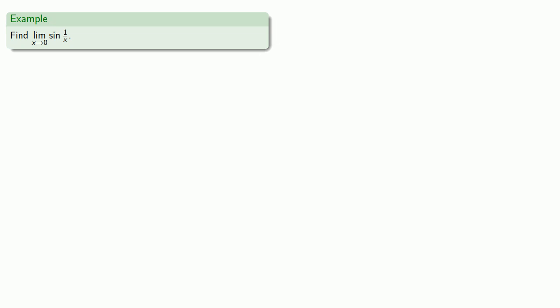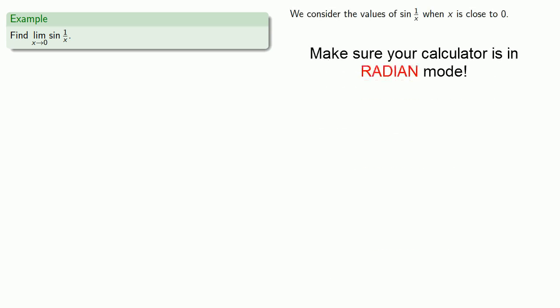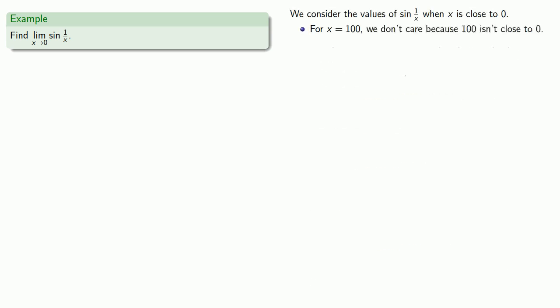Let's try another one. Let's find the limit, as x gets close to 0, of sin(1/x). So we'll consider the values of sin(1/x) when x is close to 0. So if x is 100, well, we don't actually care, 100 isn't actually close to 0. But if x is, say, 0.1, we find that sin(1/0.1) is negative 0.5440.